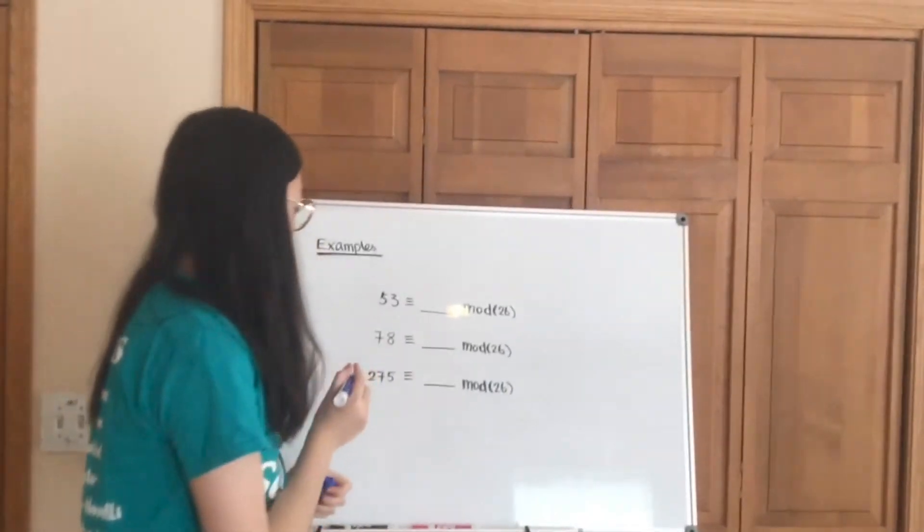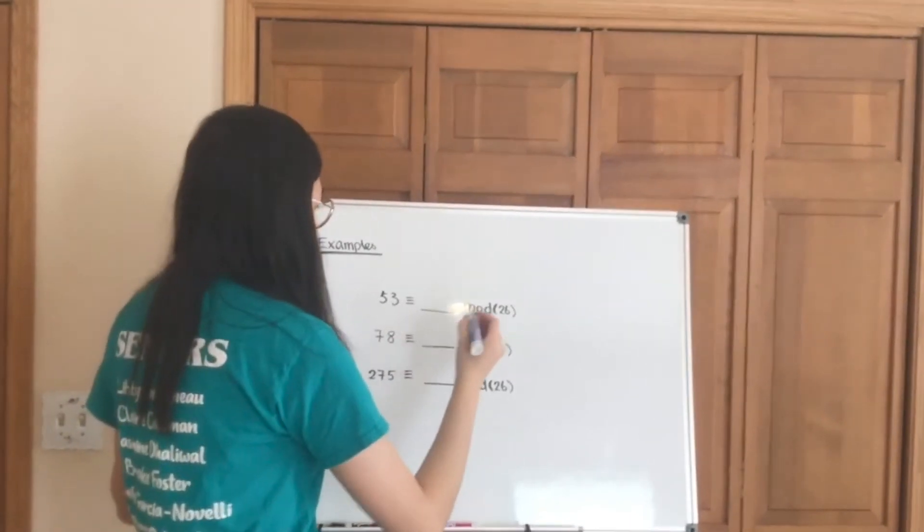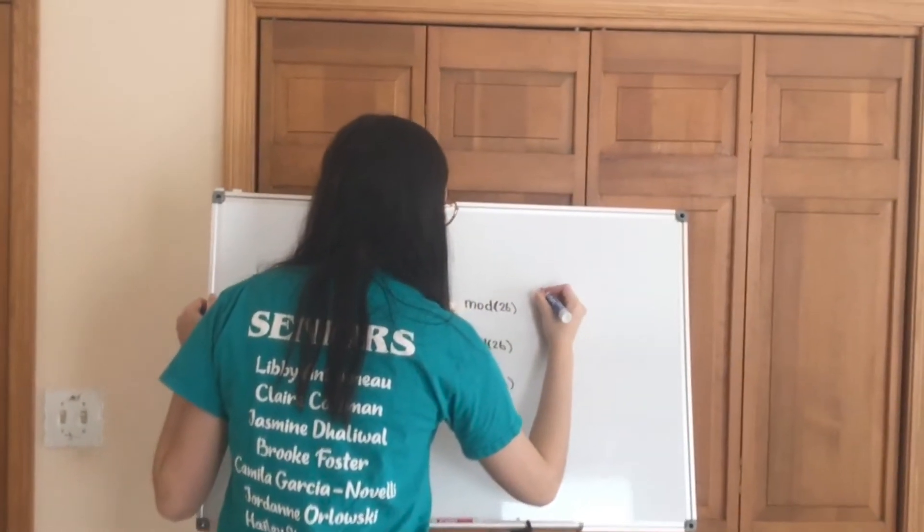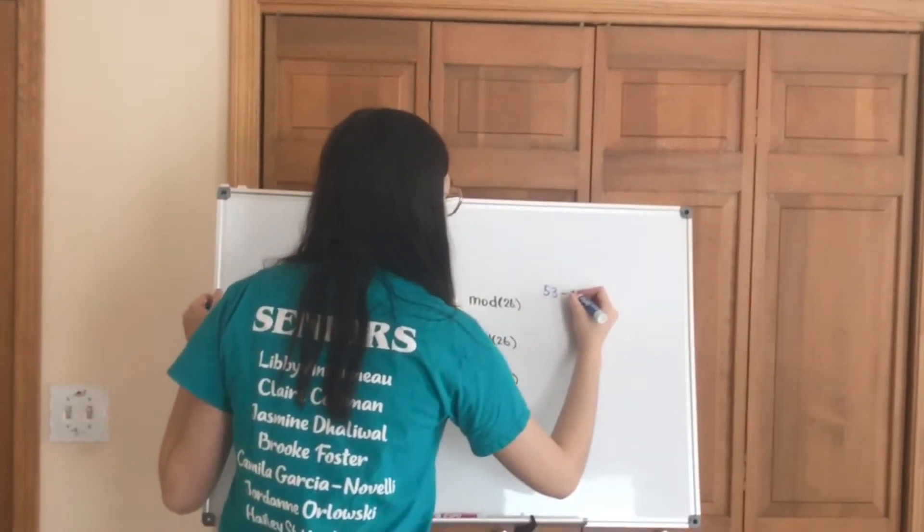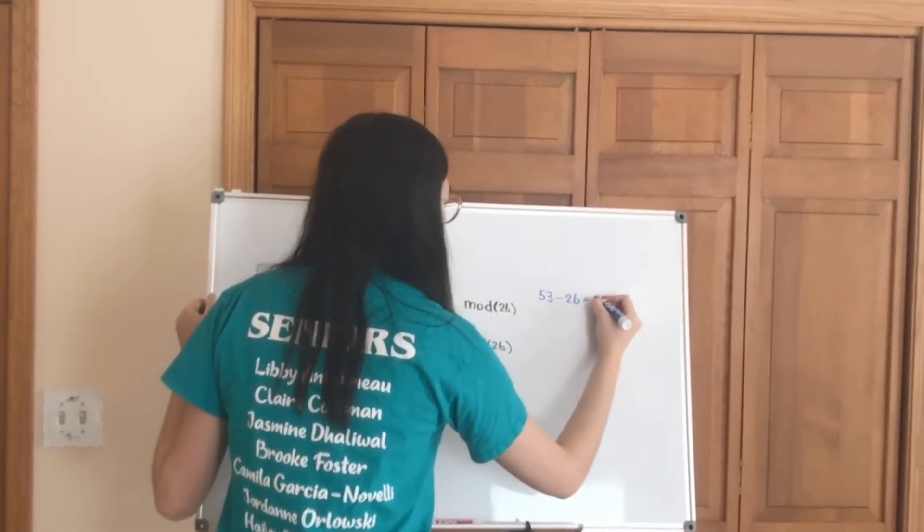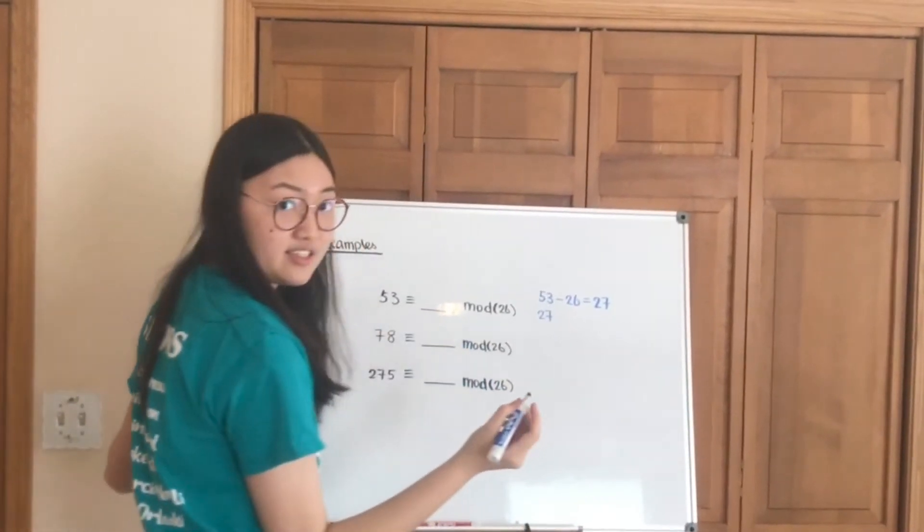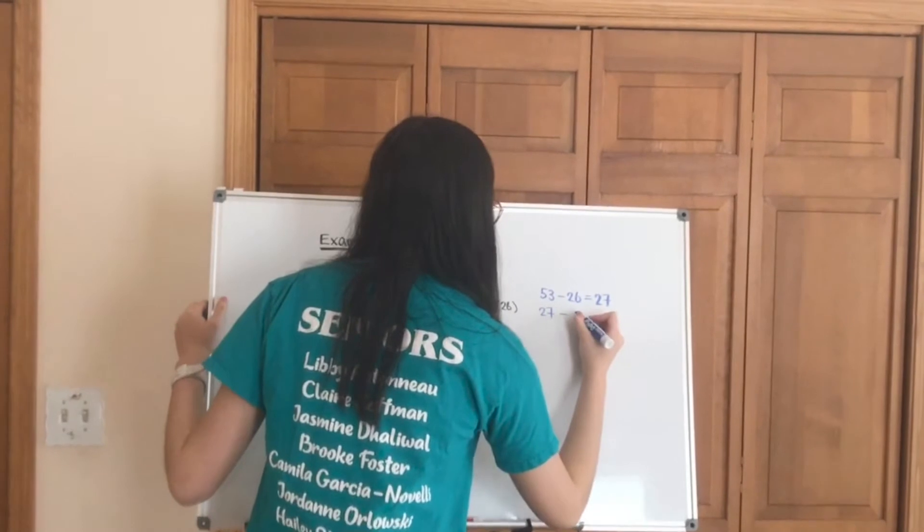Let's take first of all 53. So here's what we're going to do. In 53, we can count 1 times 26. If we subtract from it, that gives us 27. And from 27, how many 26s can we count? We can also take out 1.